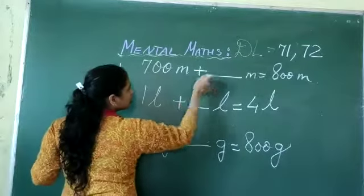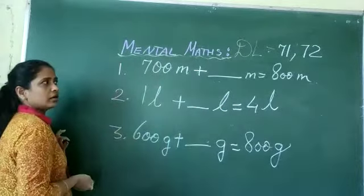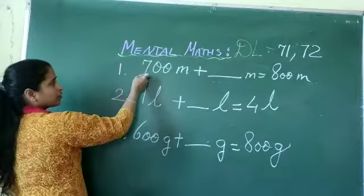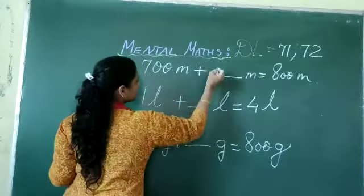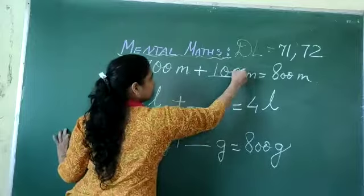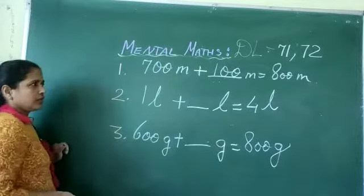These two numbers will add, the answer will come 800 meter. 700 plus 100 will get 800.